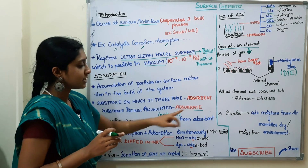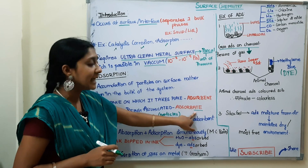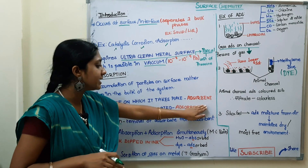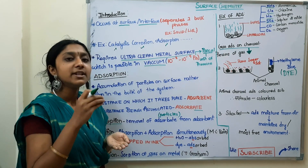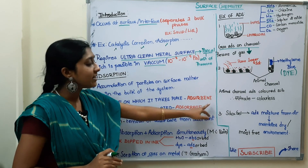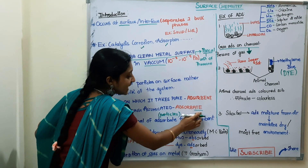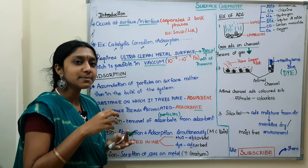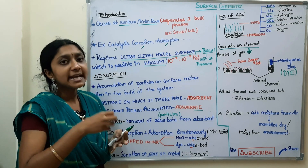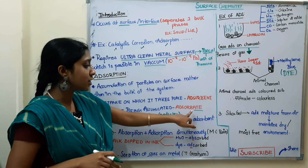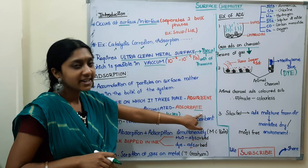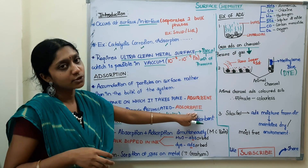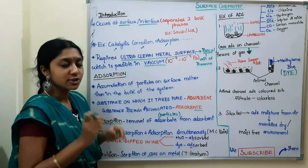There are two important terms. The substance on which adsorption takes place — the surface on which it takes place — is the adsorbent. If you add any particle or accumulate it, that particle is the adsorbate. Think of 'ate' as 'eaten up': which substance is being eaten up? That is the adsorbate. Which is eating it? That is the adsorbent. So 'ate' means it is the particle — it is easier to think of it that way.